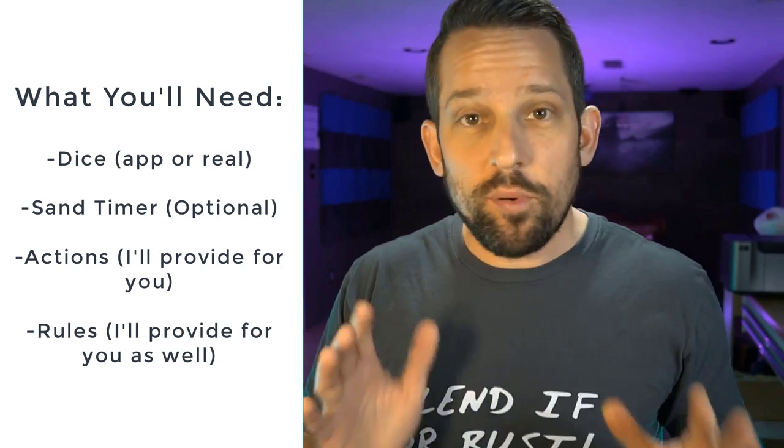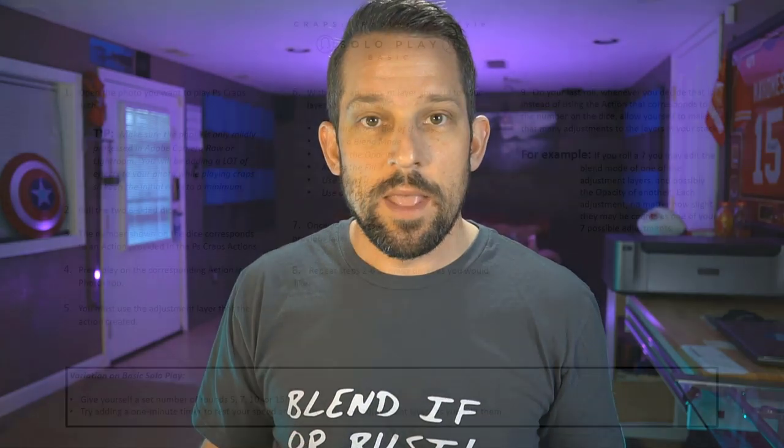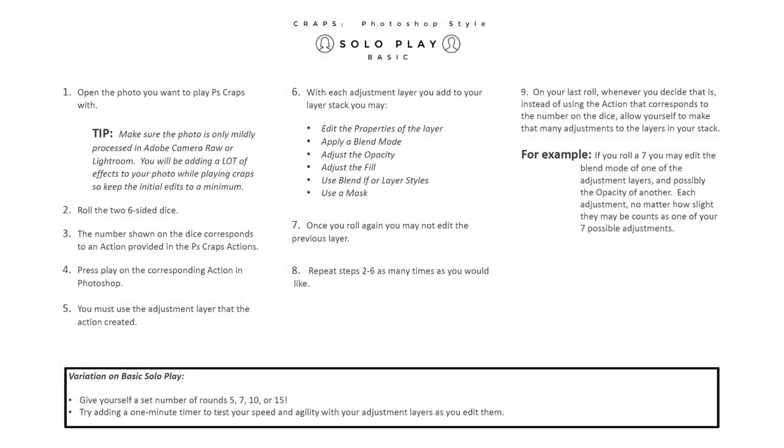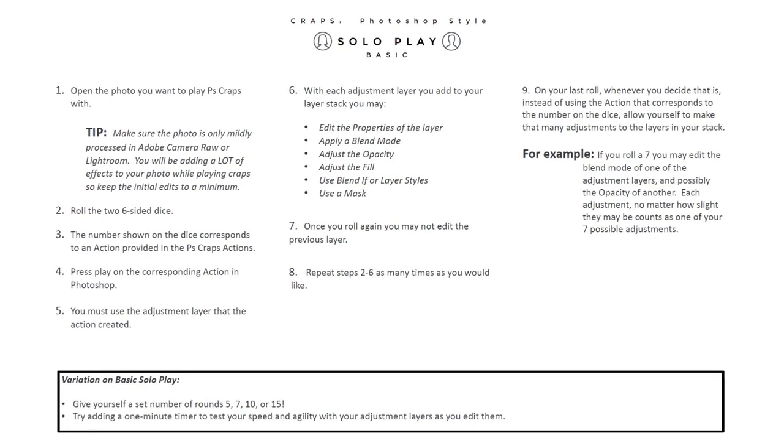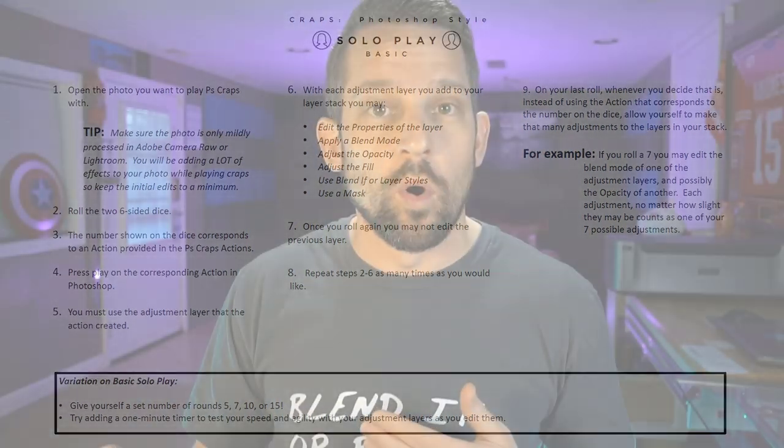So all you really need are the actions I'm going to provide, the rules, and some way to roll some dice. The rules are really straightforward and easy. I've got two different types of games you can play: one is a basic form of craps and another is more advanced where every round has a different thing that happens with your roll. You can do this solo or multiplayer — in the same room or online, like in a Zoom call with a friend during the coronavirus pandemic.